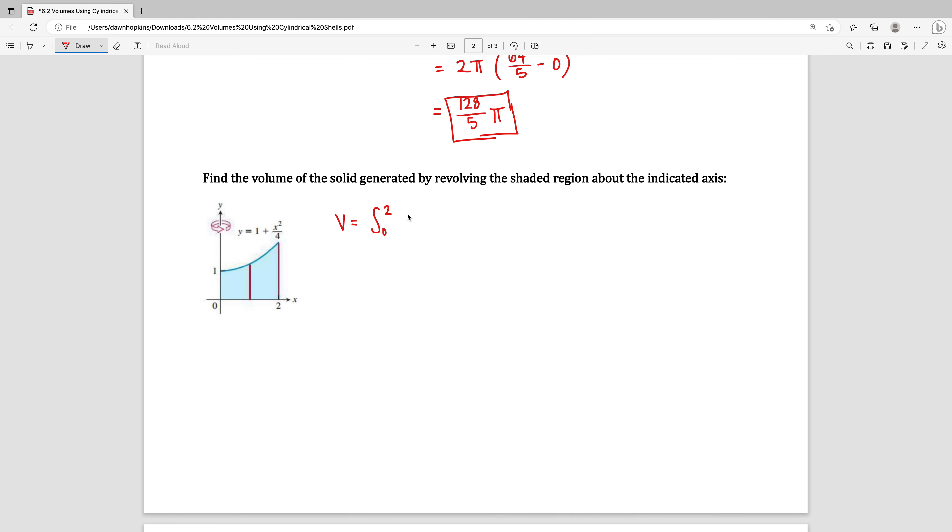It's 2 pi times the radius times the height. The radius, if we look at a point here, is going to be the distance from the Y axis to that point, and that's just going to be our X value. So it's 2 pi times X. The height is the corresponding Y value, which is 1 plus X squared over 4.